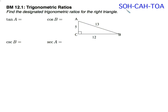Remember, sine is the ratio of the opposite side to the hypotenuse. Cosine is the ratio of the adjacent side to the hypotenuse. And tangent is the ratio of the opposite side to the adjacent side.